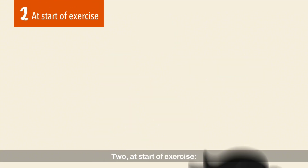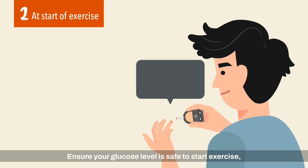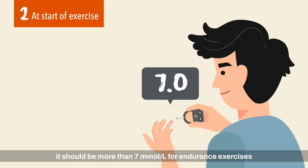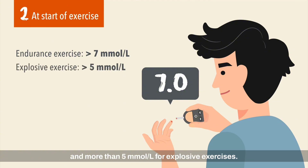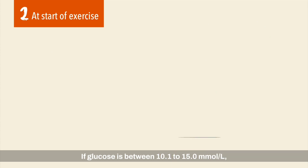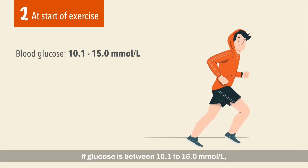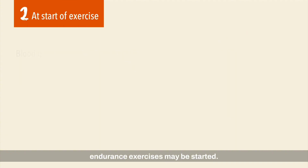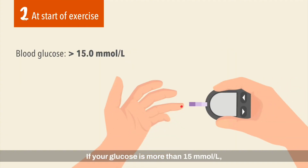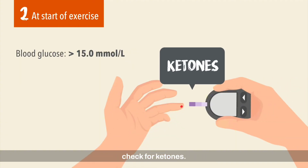At start of exercise: ensure your glucose level is safe to start exercise. It should be more than 7 millimole per liter for endurance exercises and more than 5 millimole per liter for explosive exercises. If glucose is between 10.1 to 15.0 millimole per liter, endurance exercises may be started. If your glucose is more than 15 millimole per liter, check for ketones.